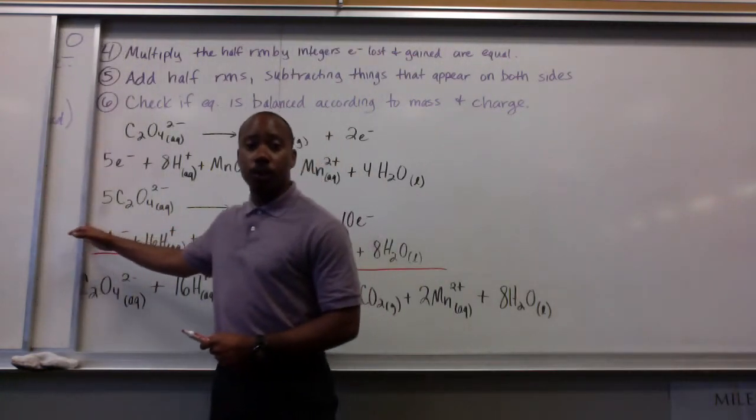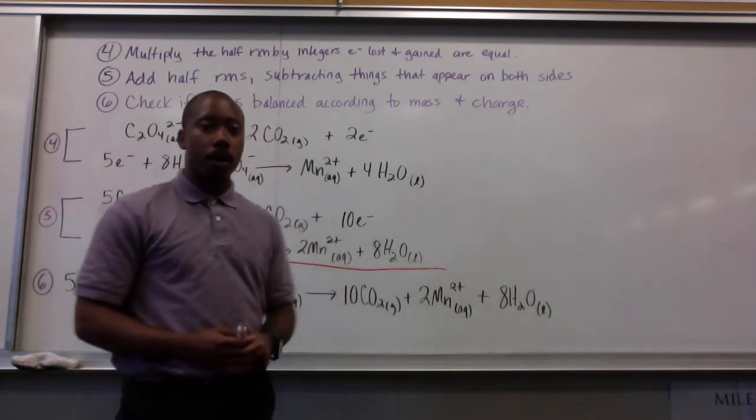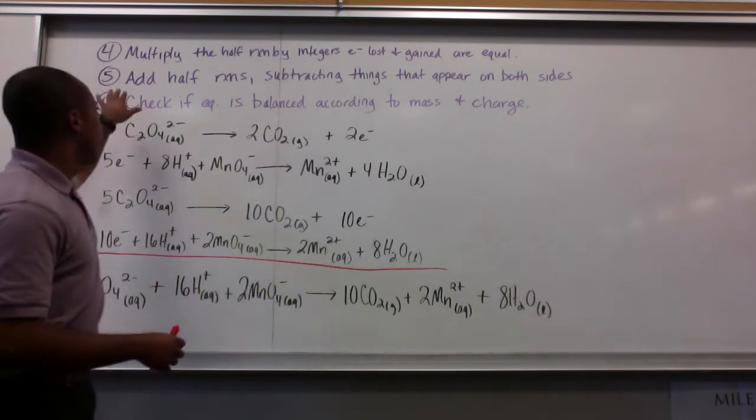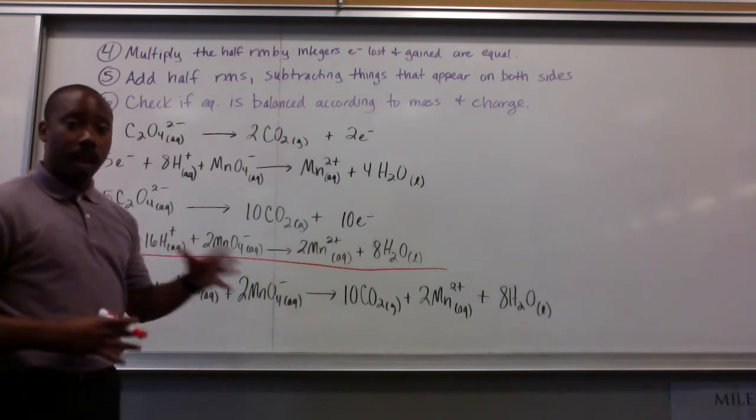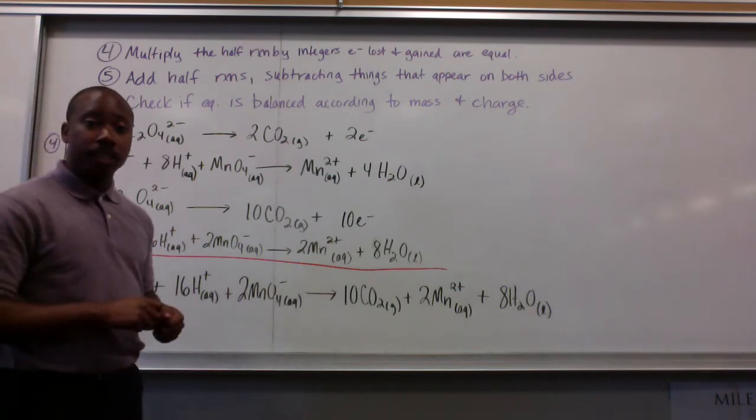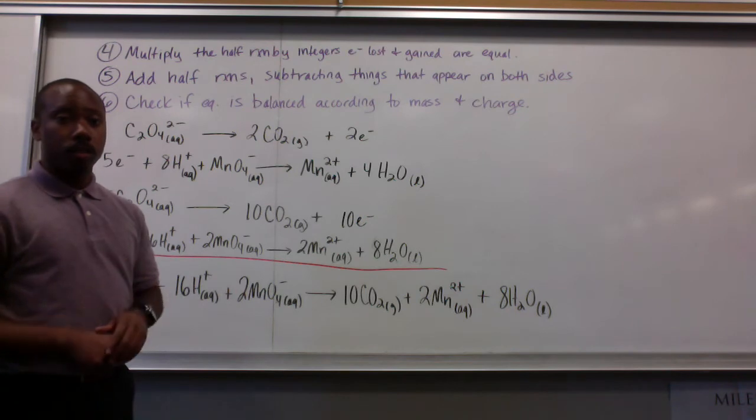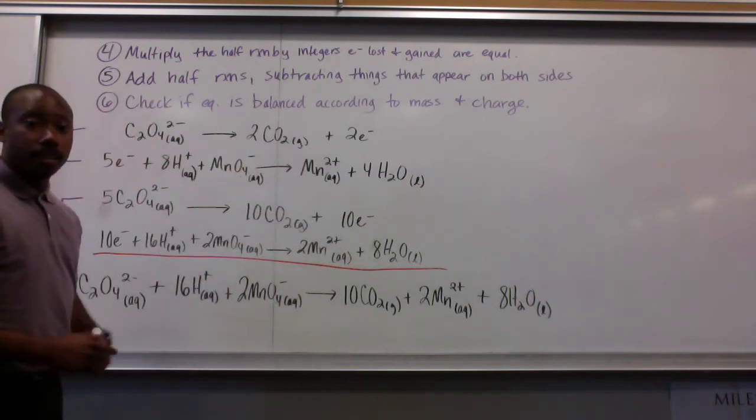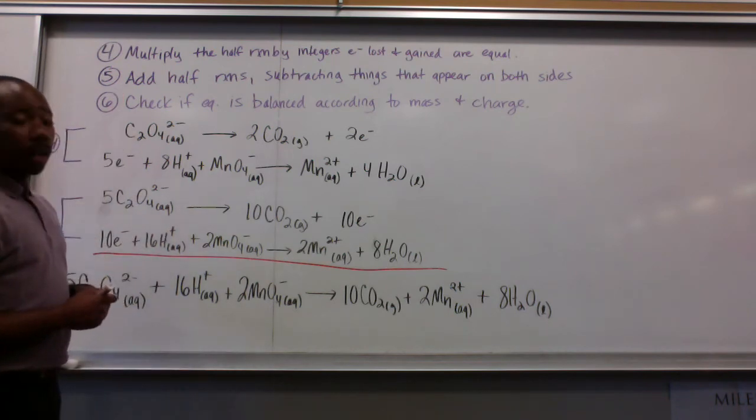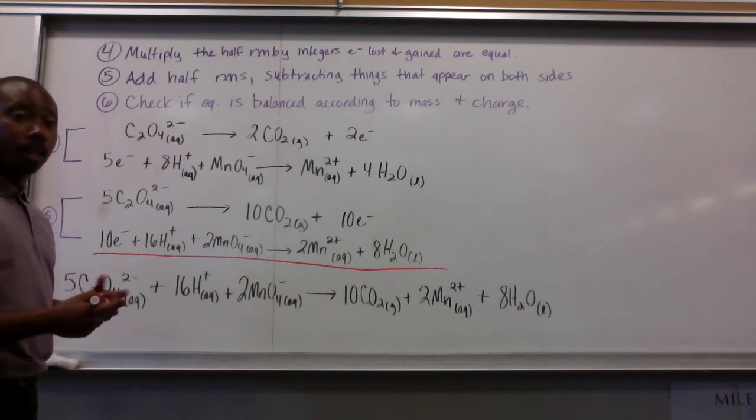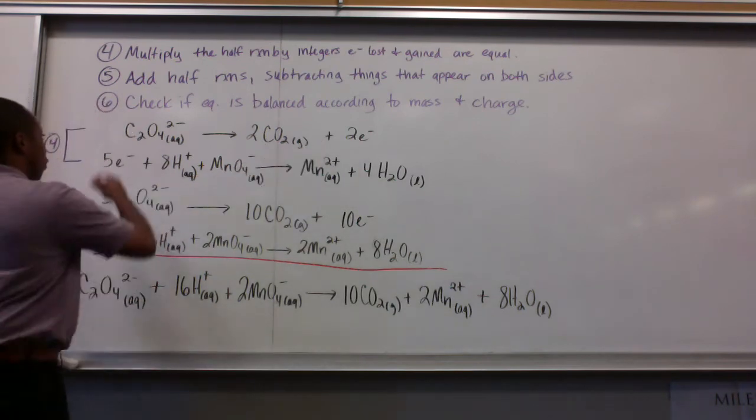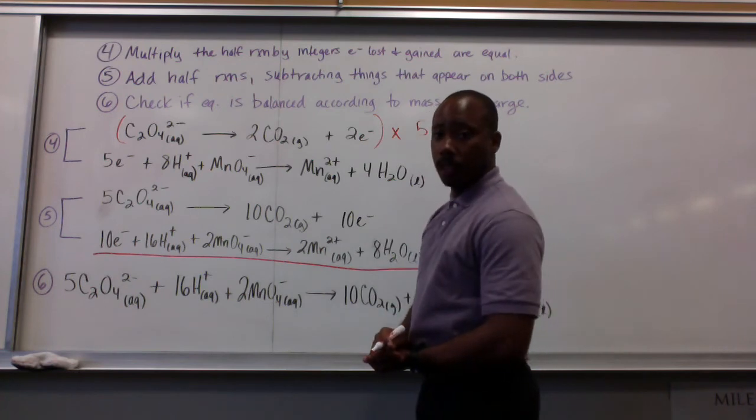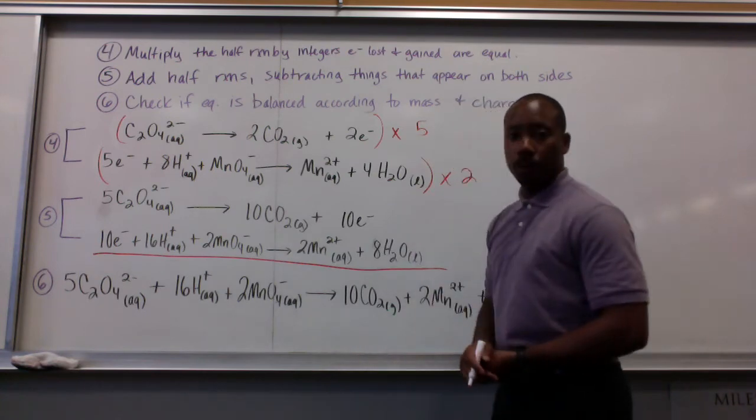Now finally, to continue this, we have to start to work to put these two things together. Step 4: We're going to multiply the half reactions by integers to get our electrons to be the same on either side so they can cancel out. 5, we add half reactions together, subtracting the things that appear on both sides of the reaction. And 6, check if the equation is balanced according to mass and charge. So let's start to do that. We have our two half reactions. We have to find a common multiple to do that. The common multiple between 5 and 2 is 10. To get them both to 10, we have to multiply them by different numbers. So multiply this entire equation by 5. For this one, multiply the entire equation by 2.